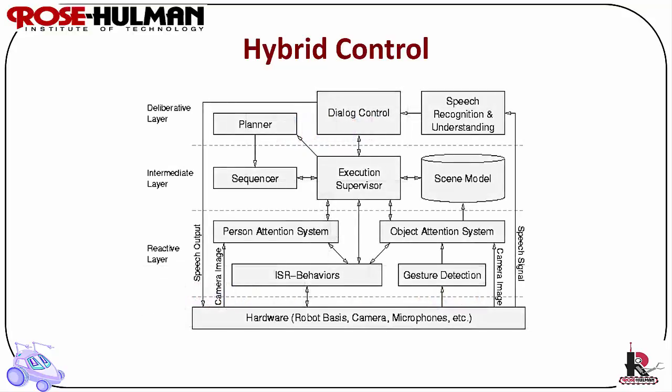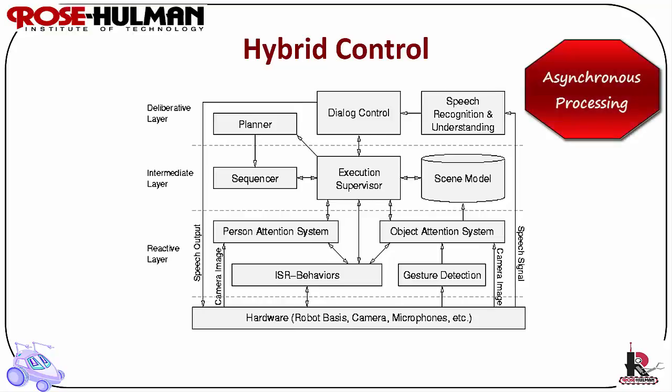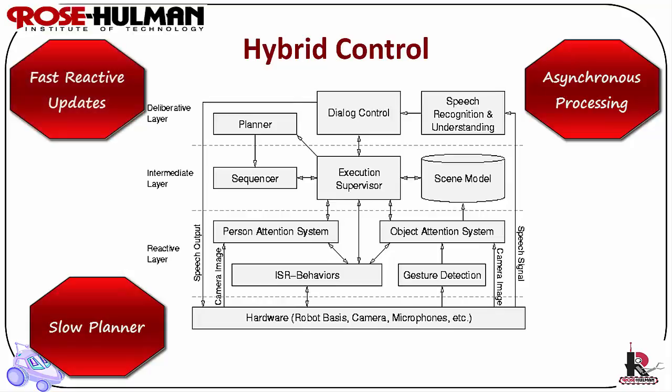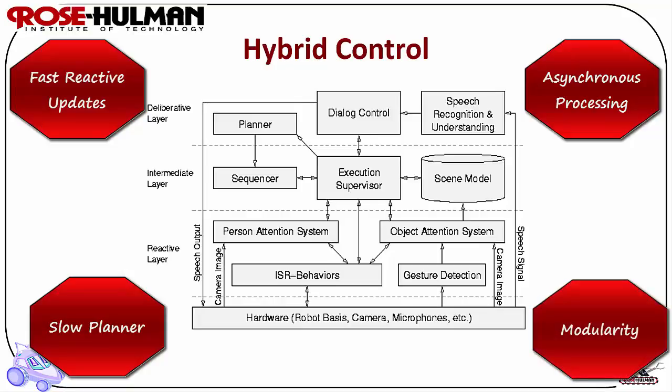Reactive control is fast but inflexible — there is no memory or planning — and deliberative control is smart but slow. Hybrid control exploits the best features of both within a single robot control system, so short and long timescales must work together. It is the best general architectural solution for robotics because asynchronous processing allows deliberative functions to operate independent of reactive behaviors. A planner can slowly compute the next goal while the robot reactively navigates with fast update rates. Good software modularity also allows subsystems to be mixed and matched.